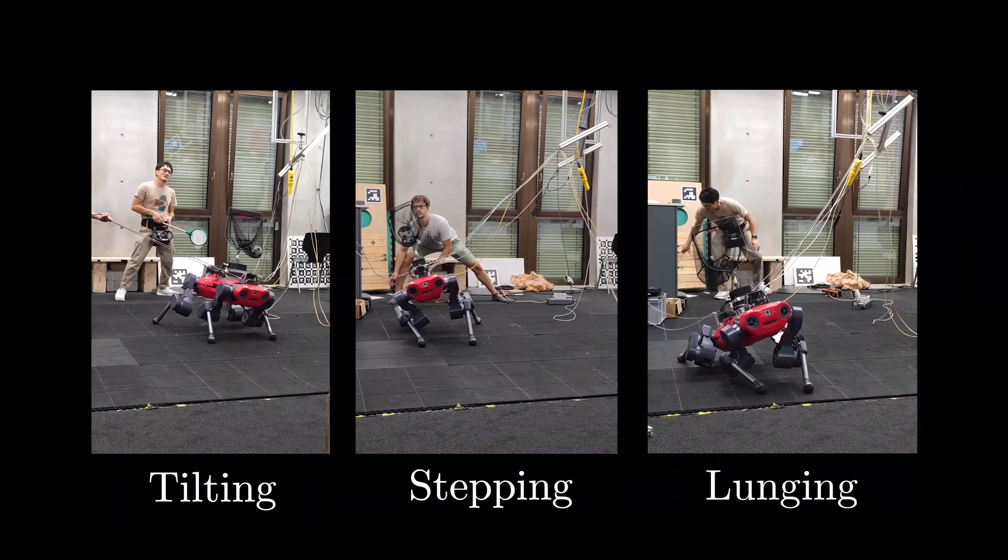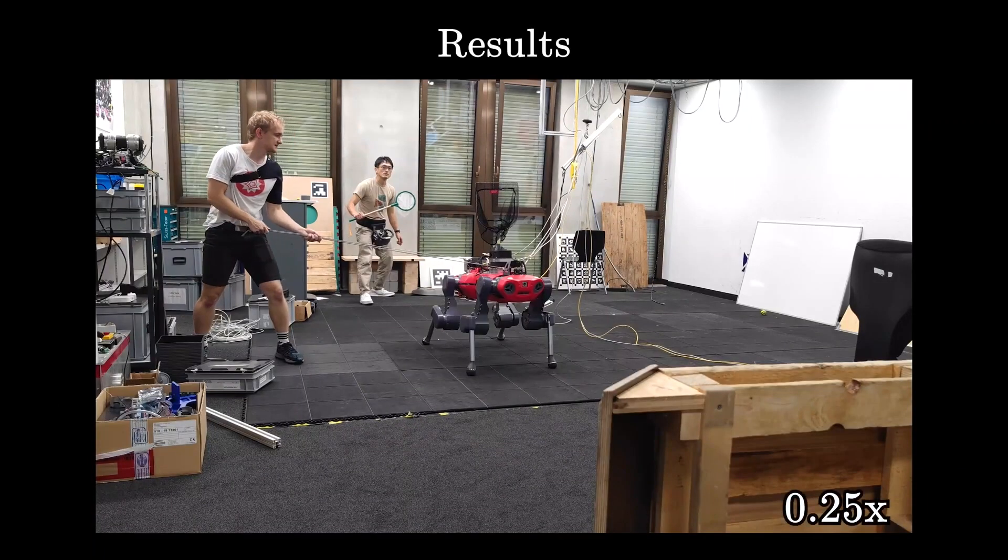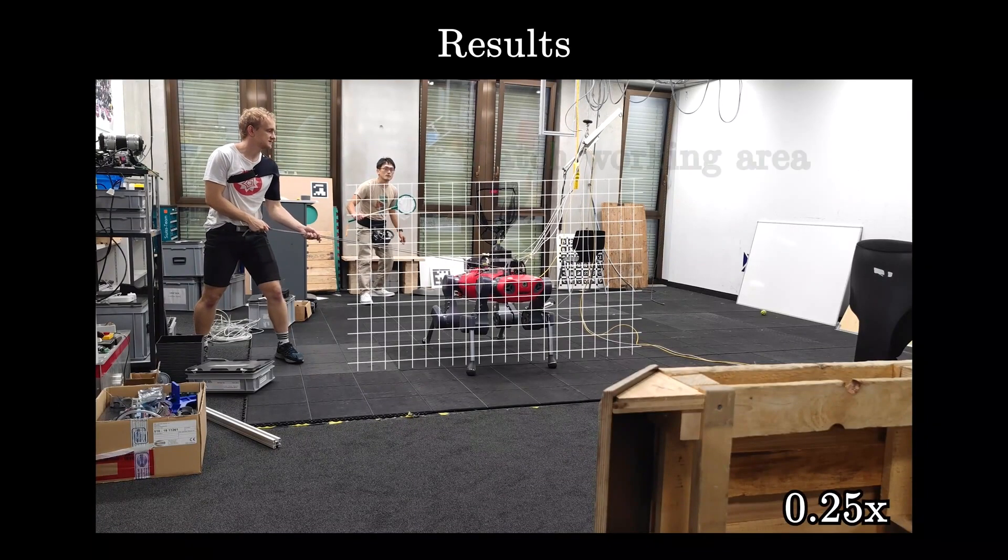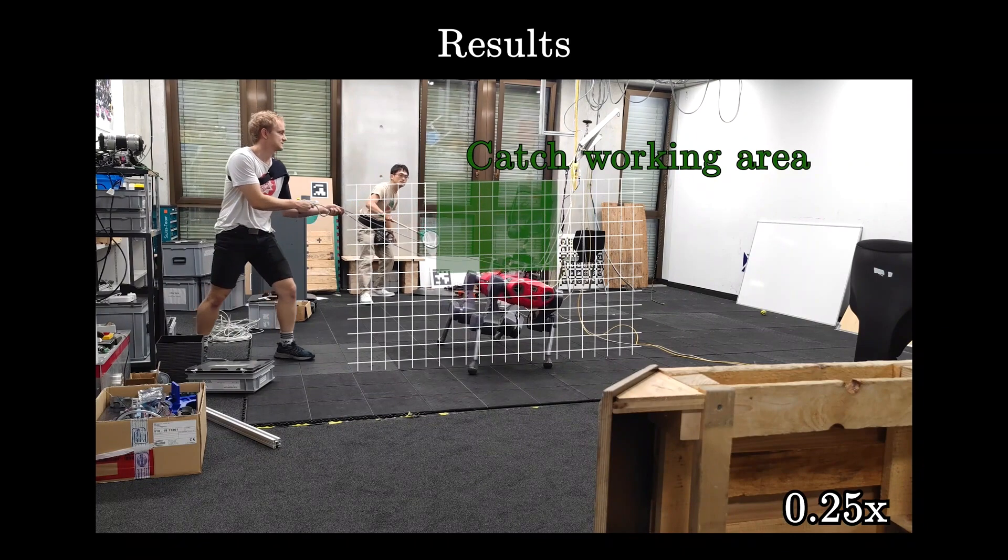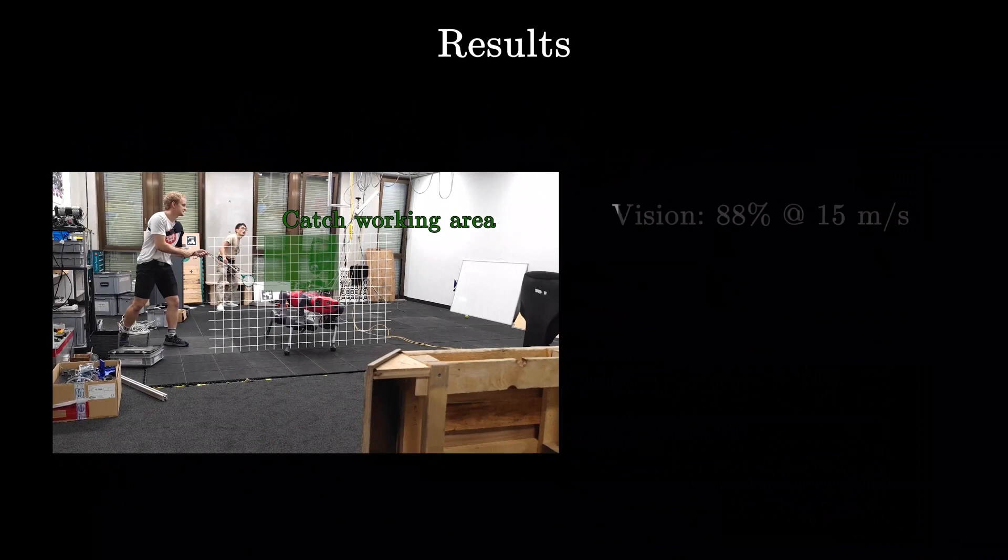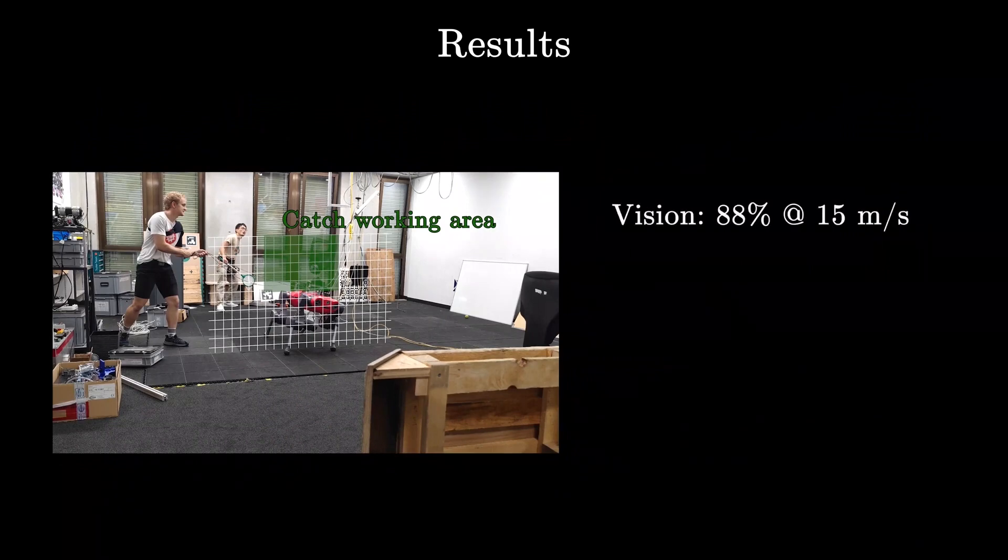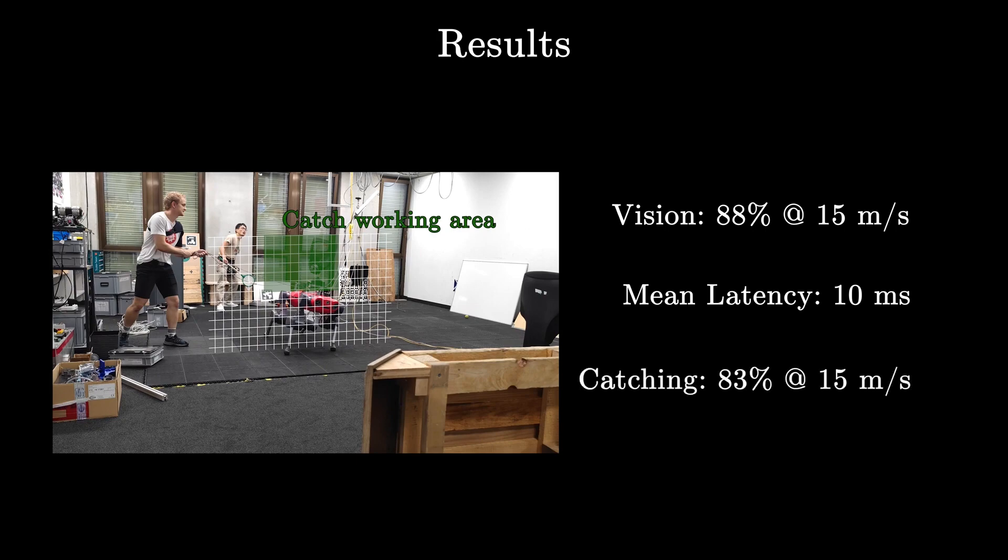Combining this policy with fast perception, we develop the catching pipeline that can handle high-speed objects. Success rates are measured within a predefined working range for both the vision and the full pipeline. The vision pipeline achieves an 88% success rate for the fastest objects of speeds around 15 meters per second while only having a 10ms latency. This, coupled with the fast catching policy, yields an 83% success rate for the whole pipeline.